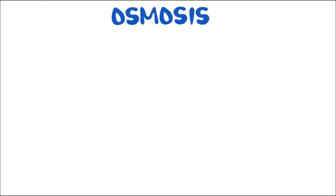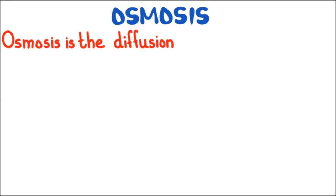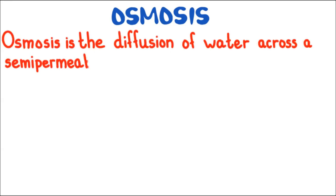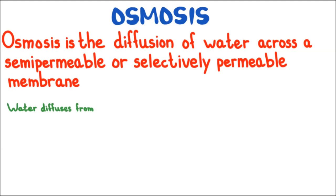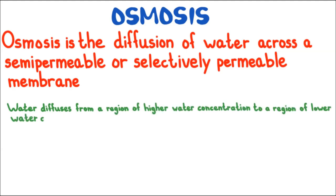What is osmosis? Osmosis is simply the diffusion of water across a semi-permeable or selectively permeable membrane. Water always diffuses from a region of higher water concentration to a region of lower water concentration.